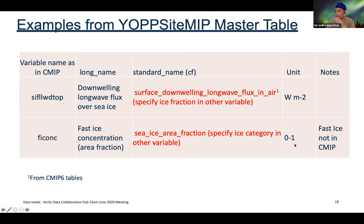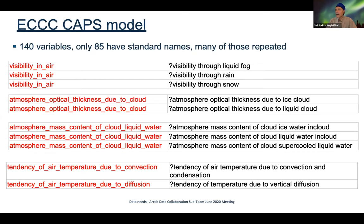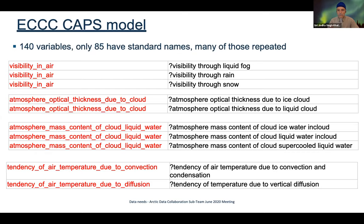There are other examples of challenges we're facing in coming up with names. The CAPS model invested a lot of time identifying equivalent CF standard names and suggested new names; where a CF standard name didn't exist, they wrote a long name. Our agreement is that the long name will be used if the standard name isn't present. For instance, the only CF standard name is 'visibility in air,' but the CAPS model outputs visibility through fog, rain, and snow.